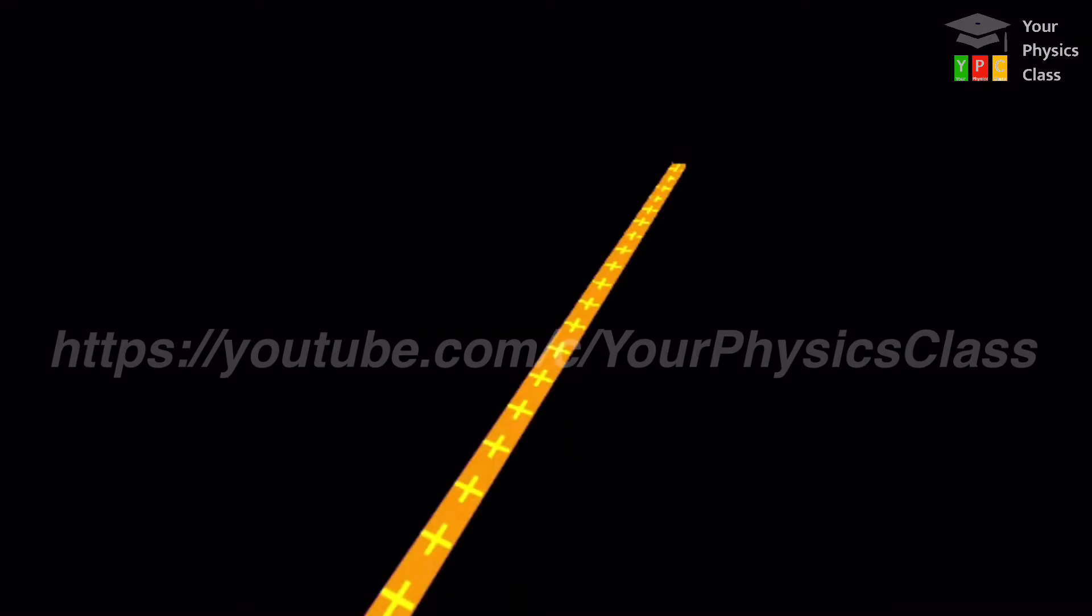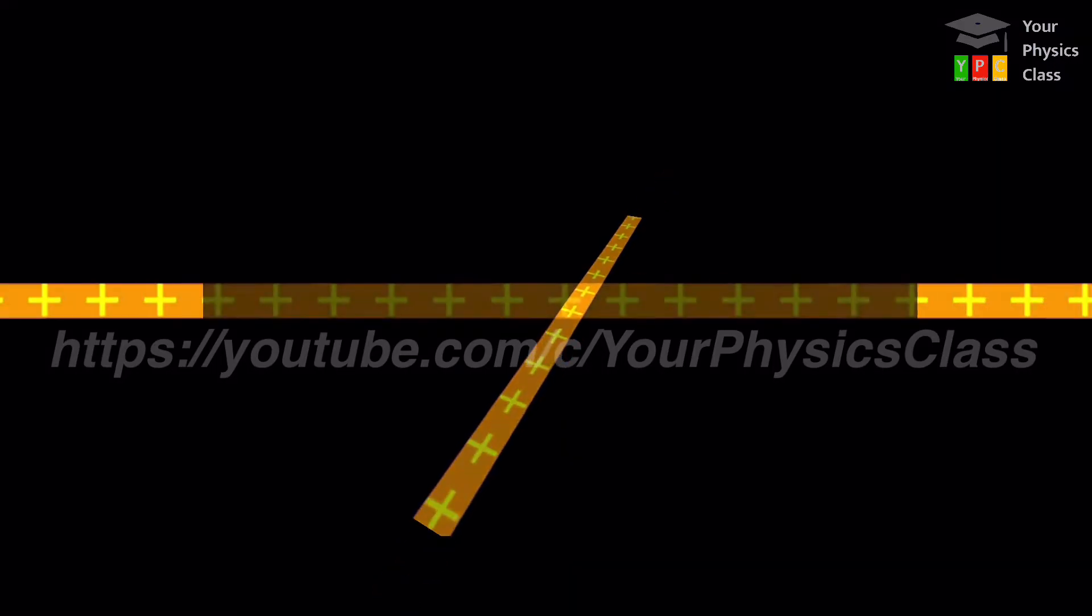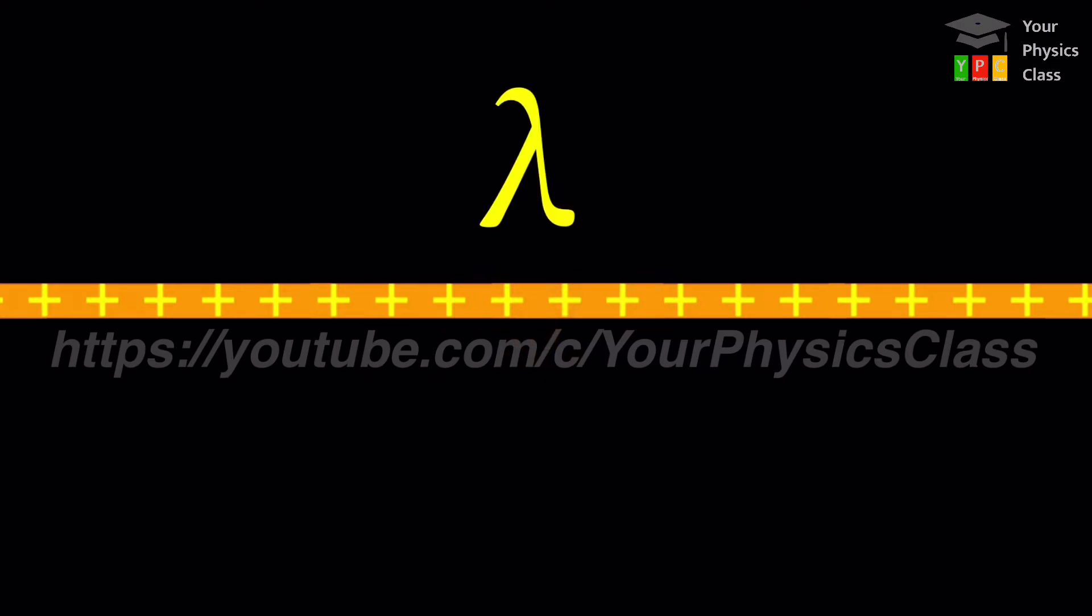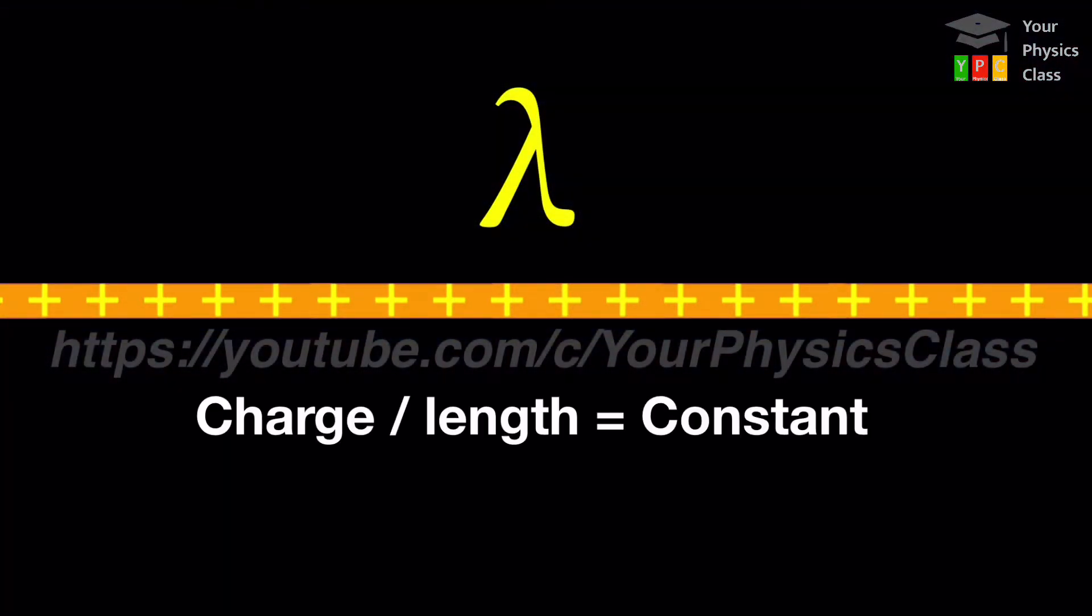Aise situation mein hum kahenge infinitely long conductor. The conductor has uniform charge density, that is, charge per unit length of this wire is constant.